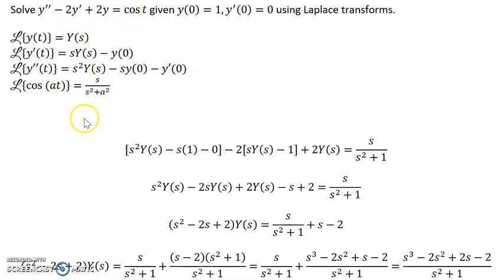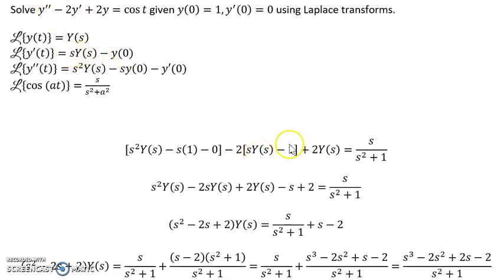The Laplace transform of cosine(at) with a=1 gives s over s²+1. Applying these formulas with y(0)=1 and y'(0)=0, we substitute into each term of the equation. Then we collect terms that don't have Y(s) separately from those that do.